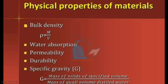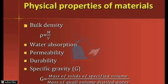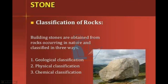Now we are going to talk about the physical properties of materials. The first is bulk density — the formula is bulk density equals mass over volume. The second is water absorption. The physical properties of material include bulk density, water absorption, permeability, durability, and specific gravity. Specific gravity is the mass of a solid of a specified volume relative to the mass of an equal volume of distilled water.